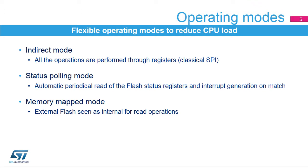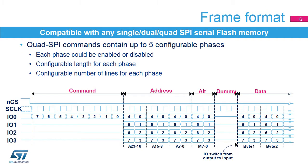The Quad SPI Memory Interface operates in three different modes. Indirect Mode, where it behaves as a classical SPI interface and all operations are performed through registers. Status Polling Mode, where the flash status registers are read periodically with interrupt generation. And Memory Mapped Mode, where the external memory is seen as an internal memory for read operations.